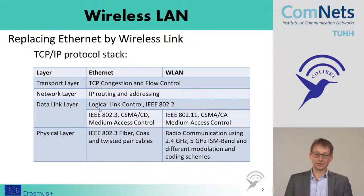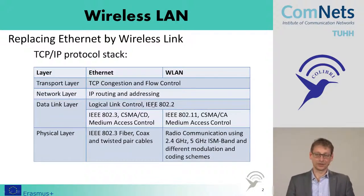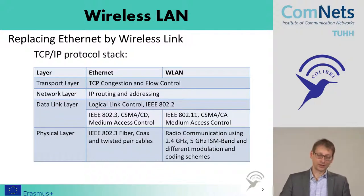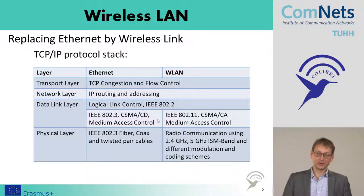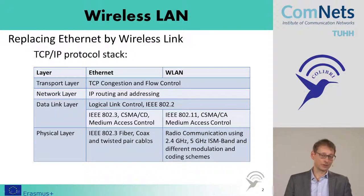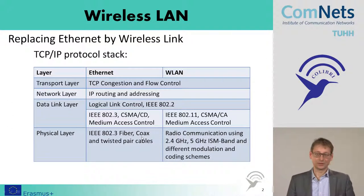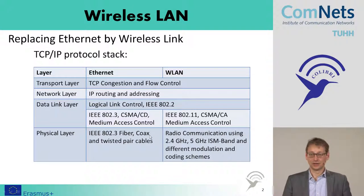We have a logical link control, standardized in IEEE 802.2, and below we have the medium access control. That's where we have to start changing, because we have to adapt the medium access control to the wireless medium. On the physical layer there is also a change, because in Ethernet we use fiber optic, coax, or twisted pair cables, while in wireless LAN the intention is to use ISM radio communication at 2.4 or 5 GHz, with different modulation and coding schemes to enable different speeds and quality of service.